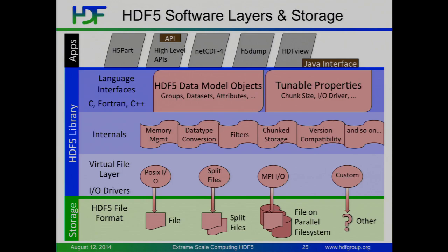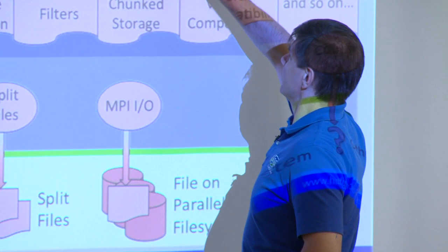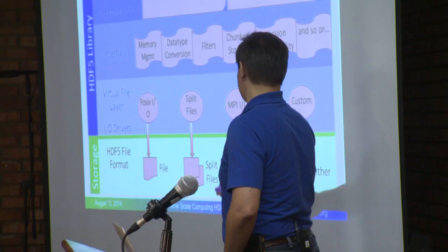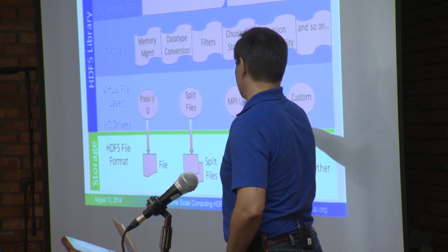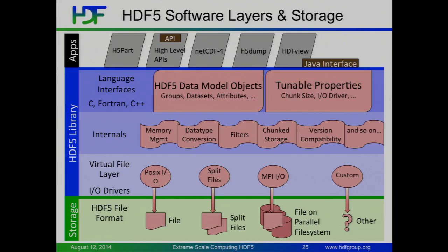HDF5's library resides in this picture. You're going to interact with API routines that deal with groups, datasets, and attributes. There are various properties to influence behavior, layout, or something else in the file — you can set how big the chunks are if you're storing chunked datasets, or how you want your data stored. At the very bottom, we have a virtual file layer that allows HDF5 files to be sent out to disk in a variety of ways. There's a custom interface should you have the desire to write an HTTP network plugin. Most people will interact at the top level, possibly through a language wrapper or one of our high-level APIs.